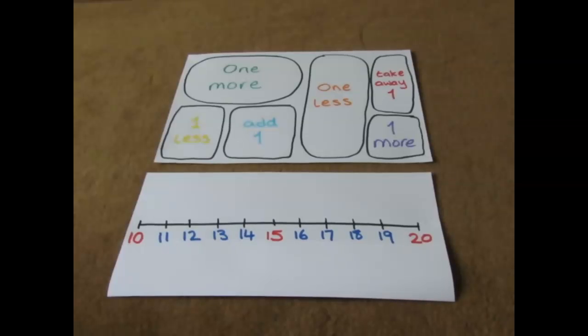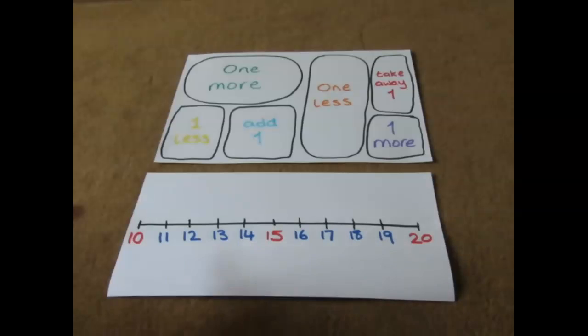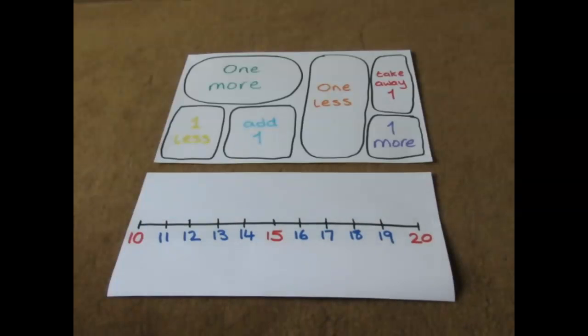We're going to play a game today where we're going to practice finding one more, one less in our numbers. So decide on a number range. We're going to practice our tricky teen numbers today. So I've drawn out a number line from 10 to 20.